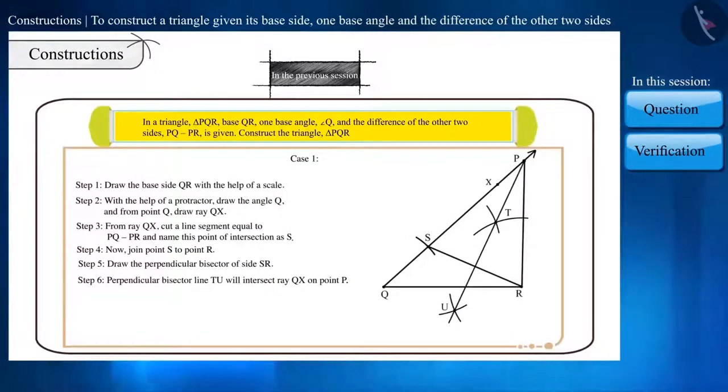In the previous video, we learned to construct a triangle whose base side, one base angle, and the difference of the other two sides are given. In this way, for the given measurement, we learned the construction in both cases.